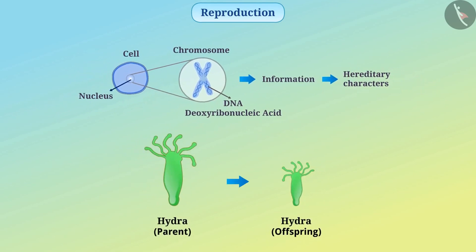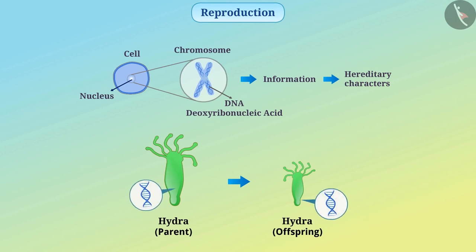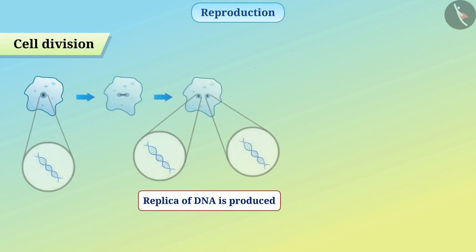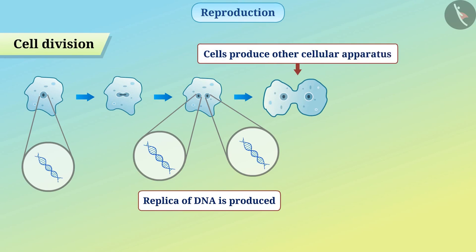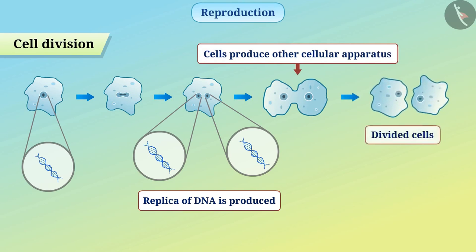Because of this, the characters of offspring seem similar to the parents, and therefore every organism can produce an organism similar to it. The main event in reproduction is producing a replica of DNA. The replica of DNA in the cell is produced by various chemical reactions. After producing the replica, cells produce other cellular apparatus and then divide such that each cell gets DNA.